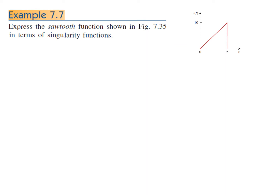Let's start with example 7.7. In this we have to express a sawtooth function in terms of singularity functions. Let's find out the slope of this line. We know slope is y over x; the equation of the line is y = mx + c. In this case y is 10 and x is 2, so y over x is 10 over 2 equals 5. So the slope is 5.